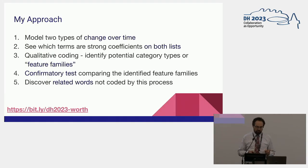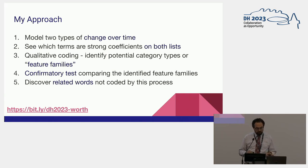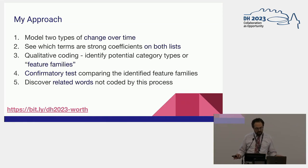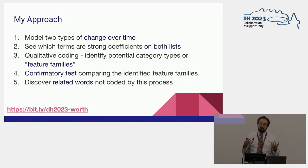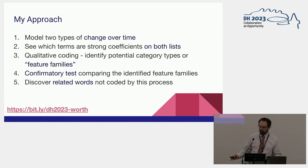I wanted to model two different kinds of change over time and see where they intersected. The idea was to look at the coefficients on both lists and do some qualitative coding of the terms to identify categorizations. I also wanted a method that could help me discover related words that weren't identified in the initial process, since many approaches have to start with assumptions about what the dominant category terms might be.